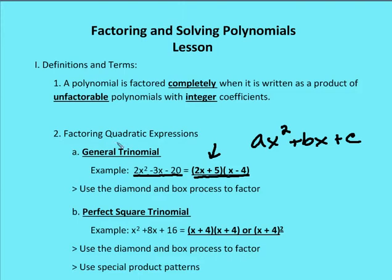Second is recognizing special product patterns. The first special product pattern is a perfect square trinomial — this is the square of a binomial, like x plus 4 times x plus 4, or x plus 4 squared. You can use the diamond and box process to factor it, or you can recognize it as a perfect square trinomial when the first term's coefficient is a perfect square, and guess x plus 4 squared directly.